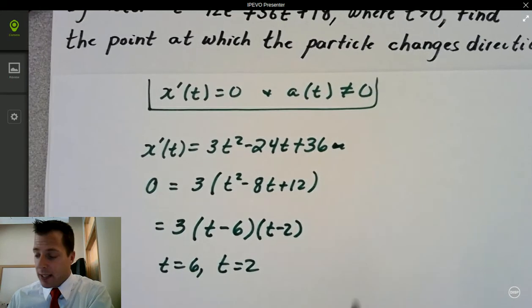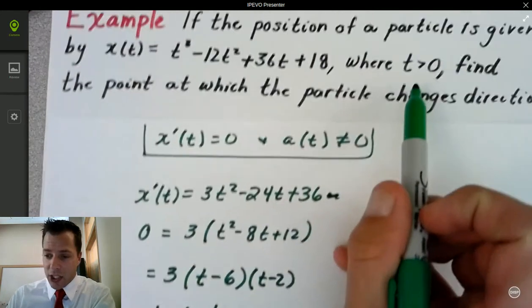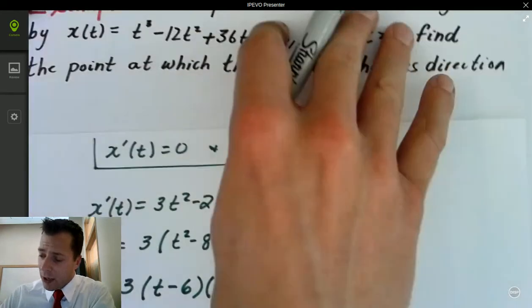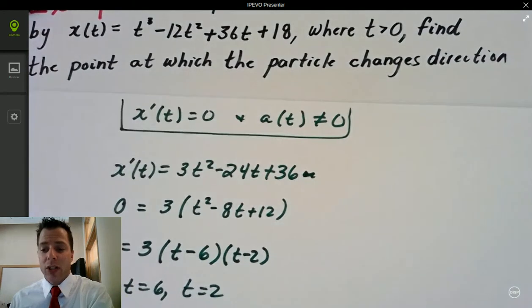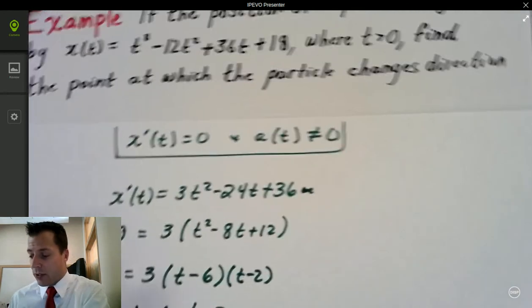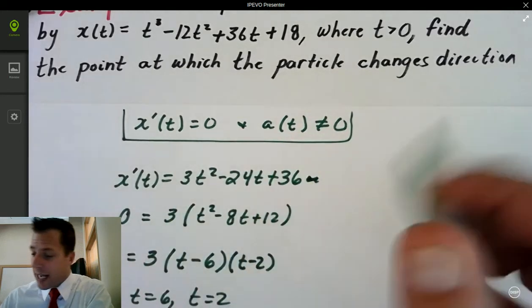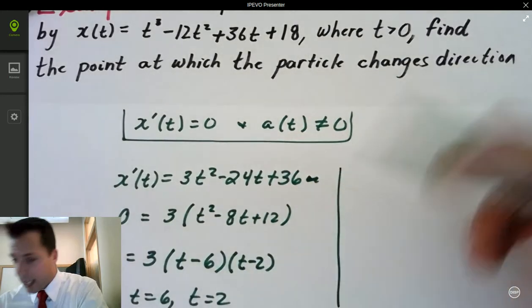That's when my velocity is 0. That matches the domain. They're both greater than 0, so I'm okay. Now I have to look at when is the acceleration equal to 0, because if we want the particle to change direction, we need a of t not to equal 0.